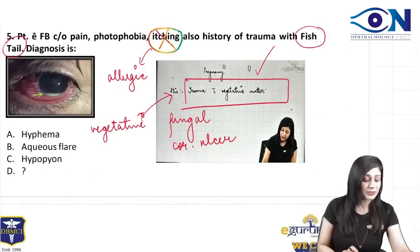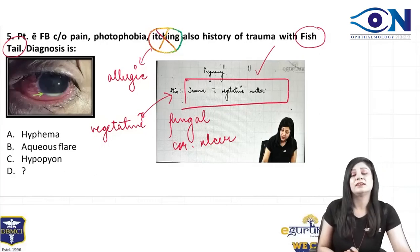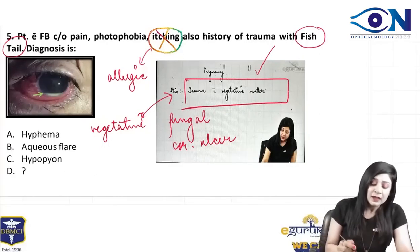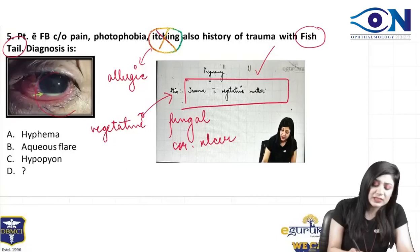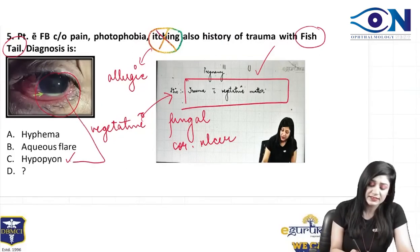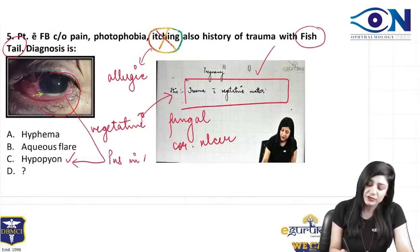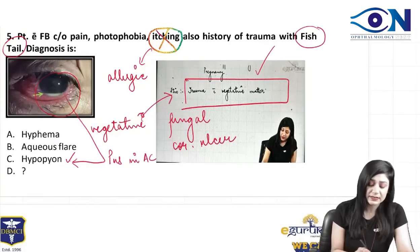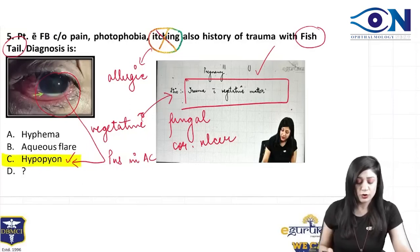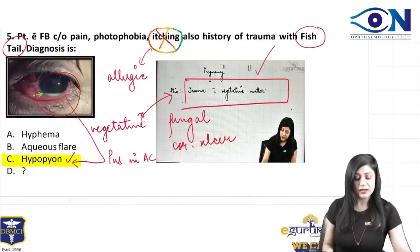Whenever they give you a history of trauma with vegetative matter, it is simply a case of fungal corneal ulcer. In this question, they are not even asking which ulcer it is — they are just asking what sign you can see. The answer is obvious: it is hypopyon, because what you can see is pus in the anterior chamber.